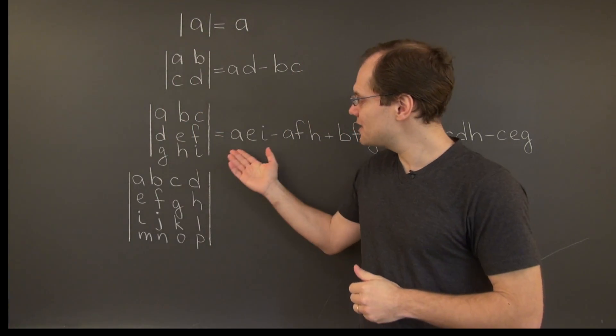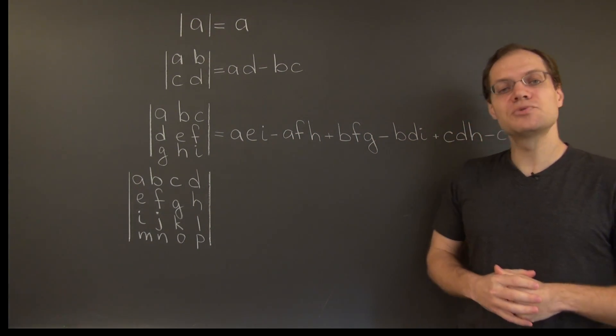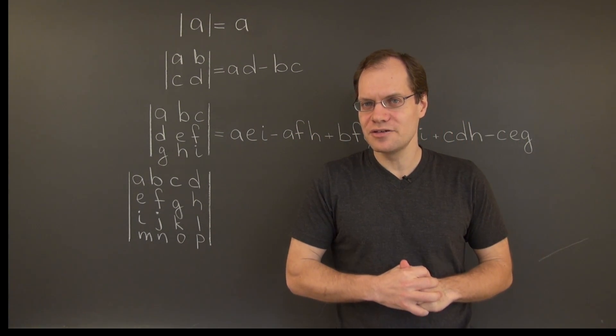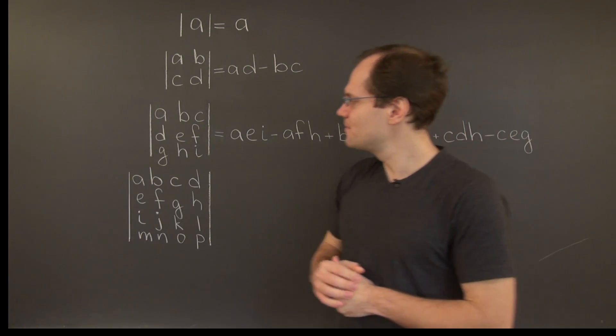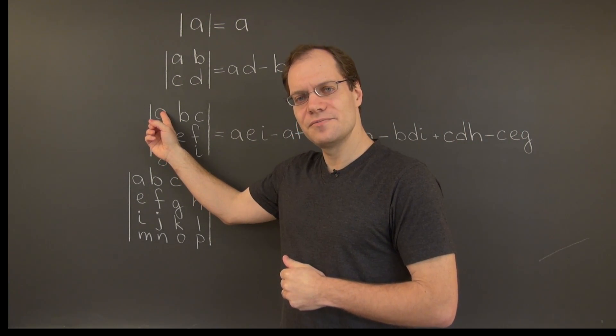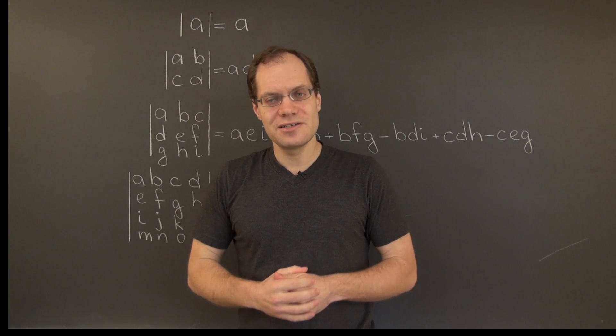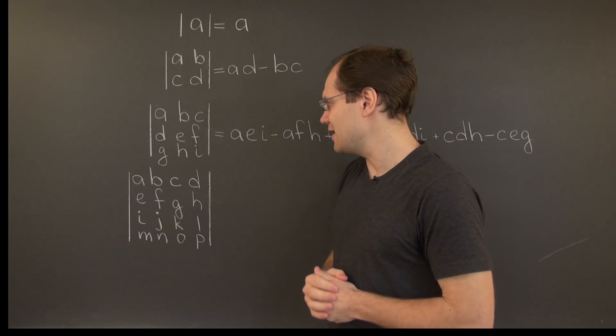Let me remind you briefly how we came up with this formula, because we're about to repeat the same strategy for 4x4 matrices. Here is what we did. We assumed that A is not zero and did a little bit of Gaussian elimination and eliminated the two entries below A.